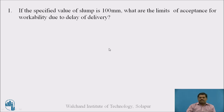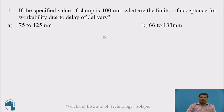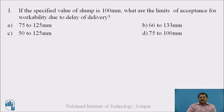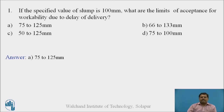Let's see one question based on this tolerance. If the specified value of slump is 100mm, what are the limits of acceptance for workability due to delay of delivery? Pause the video and give the answer. The answer is A: 75 to 125mm.